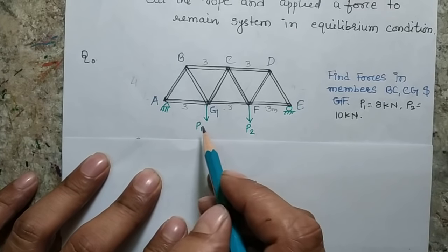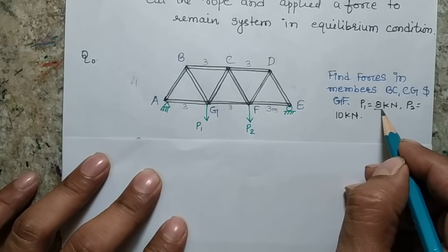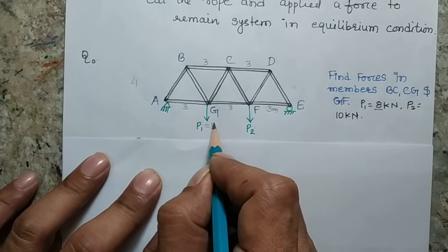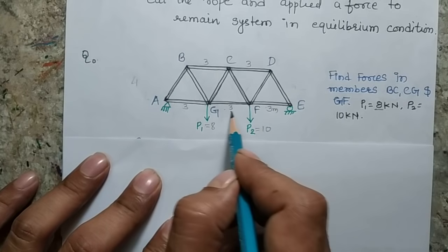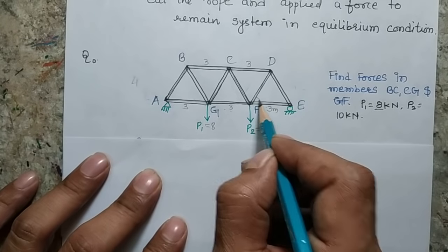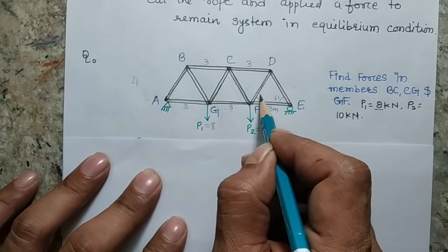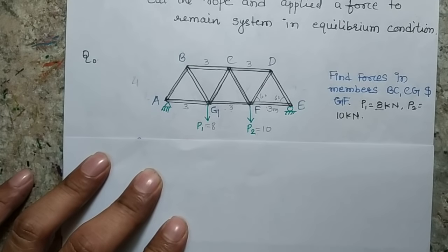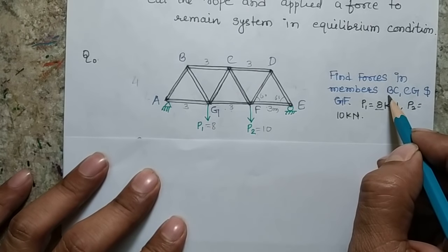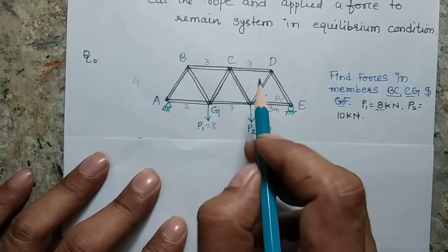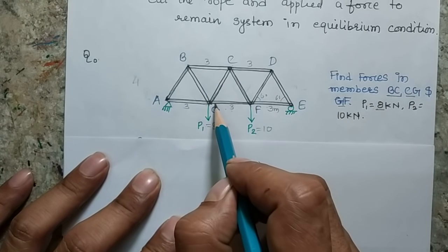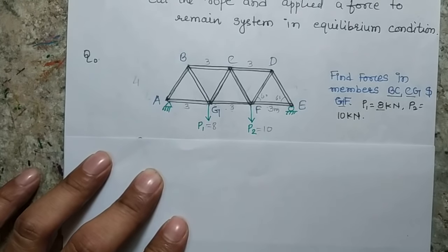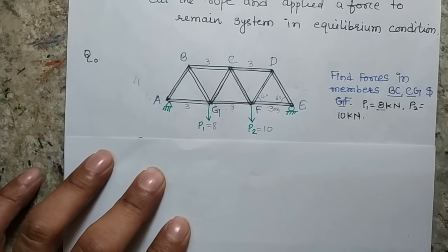Now I am showing a problem where I have a truss with two forces P1 and P2. P1 is 8 kN and P2 is 10 kN. The distances are given as 3 m and all angles are 60 degrees, forming equilateral triangles. I am interested in finding the forces in members BC, CG, and GF.